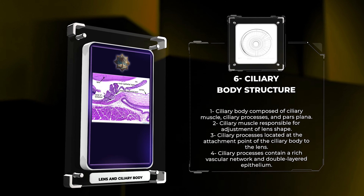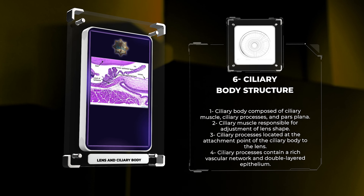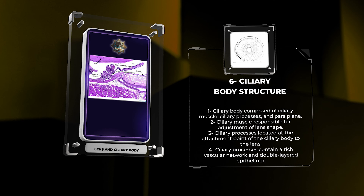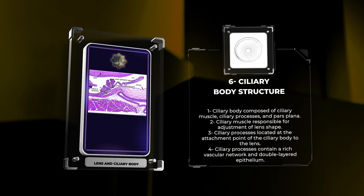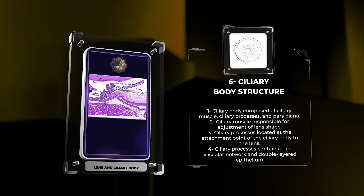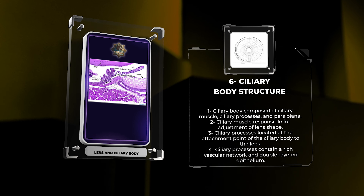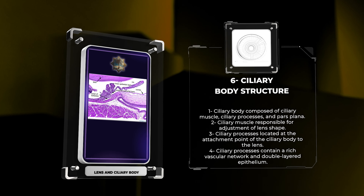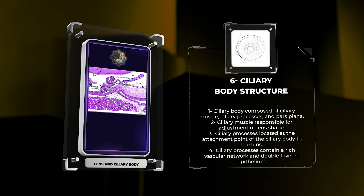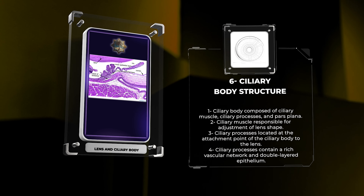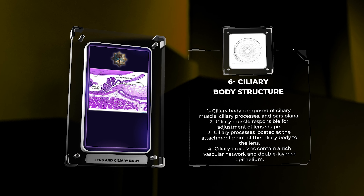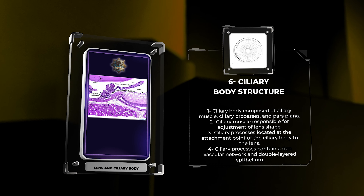The development of the lens begins during embryogenesis. The lens placode, a thickening of the surface ectoderm, invaginates to form the lens vesicle. The lens vesicle then differentiates into the lens capsule, lens fibers, and lens epithelium. Remarkably, the lens lacks blood vessels and primarily relies on diffusion from the aqueous humor and surrounding tissues for nutrient supply. This avascularity contributes to the lens transparency.